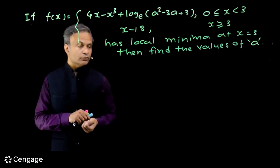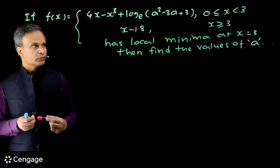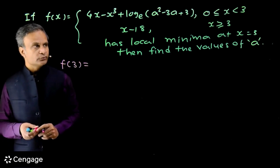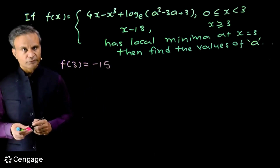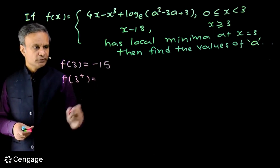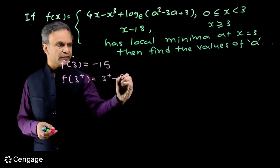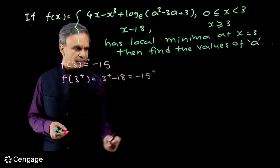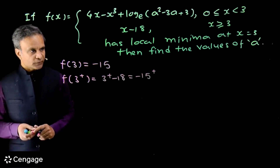Since there is a local minima at x=3, let's find f(3). For x=3 we use the second branch, putting x=3 we get f(3) = 3−18 = −15. Now f(3+): slightly to the right of 3, f(3+) = 3+−18 = −15+, which is slightly more than −15.